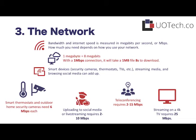So then we have the network. Bandwidth and internet speed is measured in megabits per second, and how much you need really depends on how you use your network. One megabyte, which is the measurement for file sizes, equals eight megabits. It can get kind of confusing with the nomenclature. But what that means is on a one megabit per second connection, it takes a one megabyte file eight seconds to download.